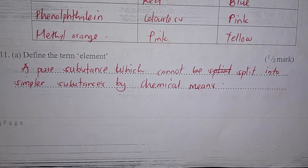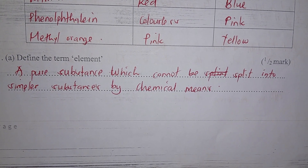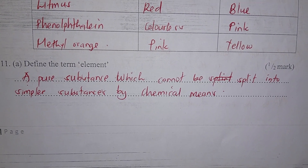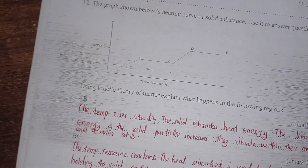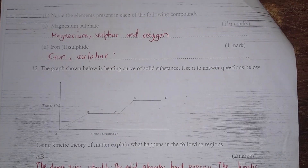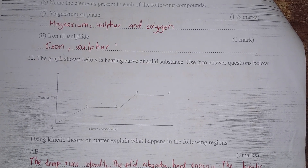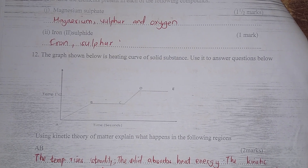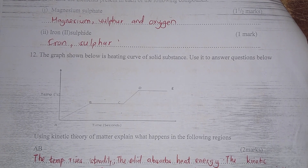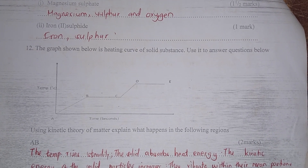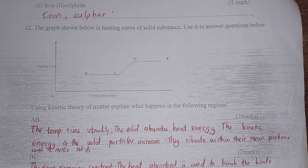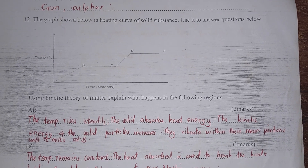Define the term element: it is a pure substance that cannot be split into anything simpler by chemical means. Name the elements present in magnesium sulfate: magnesium, sulfur, and oxygen. For iron(II) sulfide: iron and sulfur.